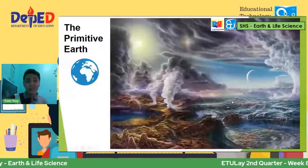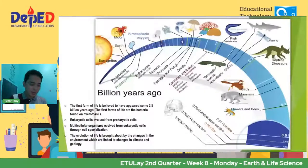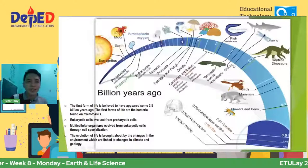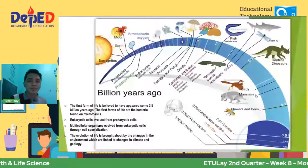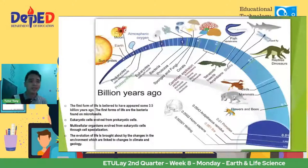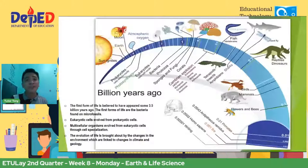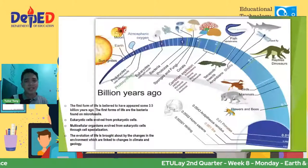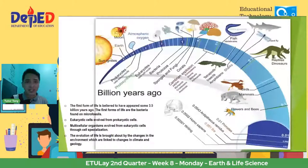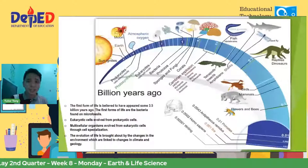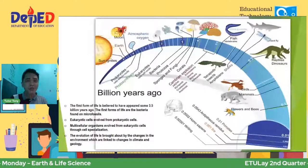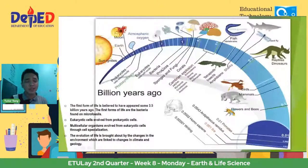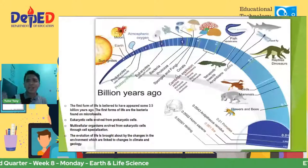So I also want you to recall the timeline ng evolution natin — from the beginning na nag-start ng life natin, nag-boom on life, hanggang mag-exist tayo, ang mga tao. The first form of life is believed to have appeared some 3.5 billion years ago. The first forms of life are the bacteria — very simple sa laaskin and they are found in microfossils. We have discussed about eukaryotes and prokaryotes. Eukaryotes have a very stable nucleus surrounded by the nuclear envelope; prokaryotic cells naman, hindi organized yung mga parts ng cells nila. Eukaryotic cells evolved from prokaryotic cells.